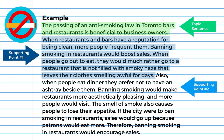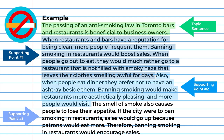The second point would be: also, when people eat dinner, they prefer not to have an ashtray beside them. Banning smoking would make restaurants more aesthetically pleasing, and more people would visit. And the last point: the smell of smoke also causes people to lose their appetite. If the city were to ban smoking in restaurants, sales would go up because patrons would eat more.